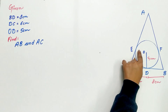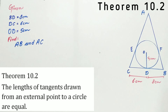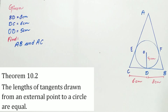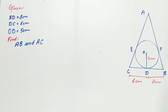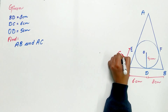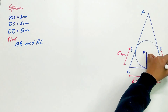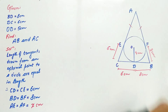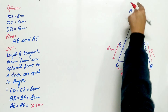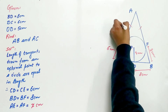Follow the steps. Let's label the points of contact as E and F respectively. Now remember Theorem 10.2? It says the lengths of tangents drawn from an external point to a circle are equal. That means CD equals EC, which is 6 cm, and similarly BD equals BF, which is 8 cm. A is an external point and AE and AF are tangents to the circle from that external point, hence they are equal in length. Let their length be equal to x cm.